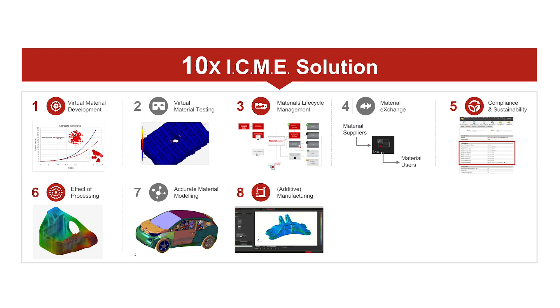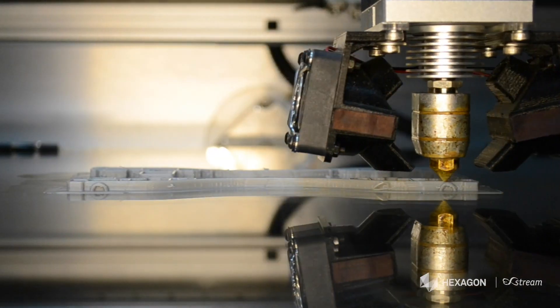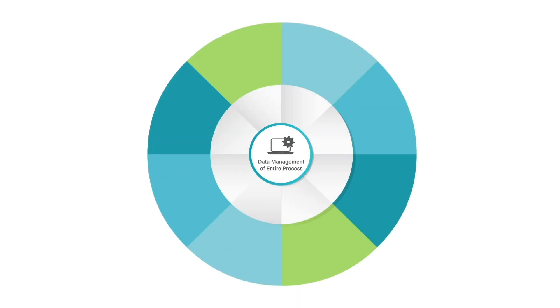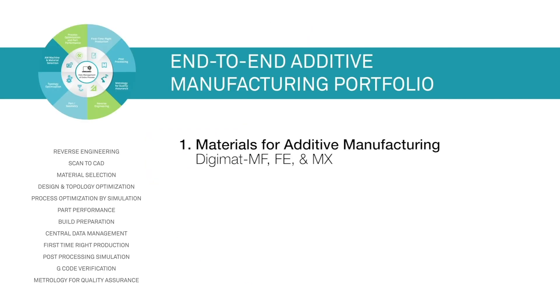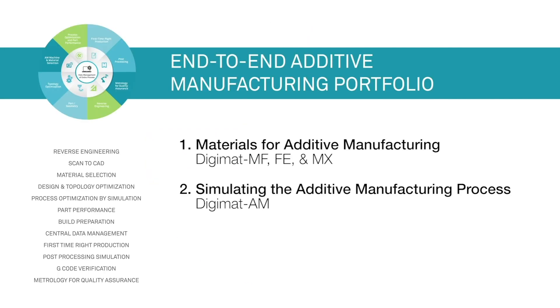The eighth building block of our 10-block ICME strategy is manufacturing. We rely on information from the manufacturing process to model the behavior of the material in the final part. This information can come from testing or from simulation. One of the hottest topics today is additive manufacturing. We developed an end-to-end solution for additive manufacturing built on three components: designing material for additive manufacturing, simulating the process, and finally modeling the performance of the printed part as a function of the manufacturing process and the material.